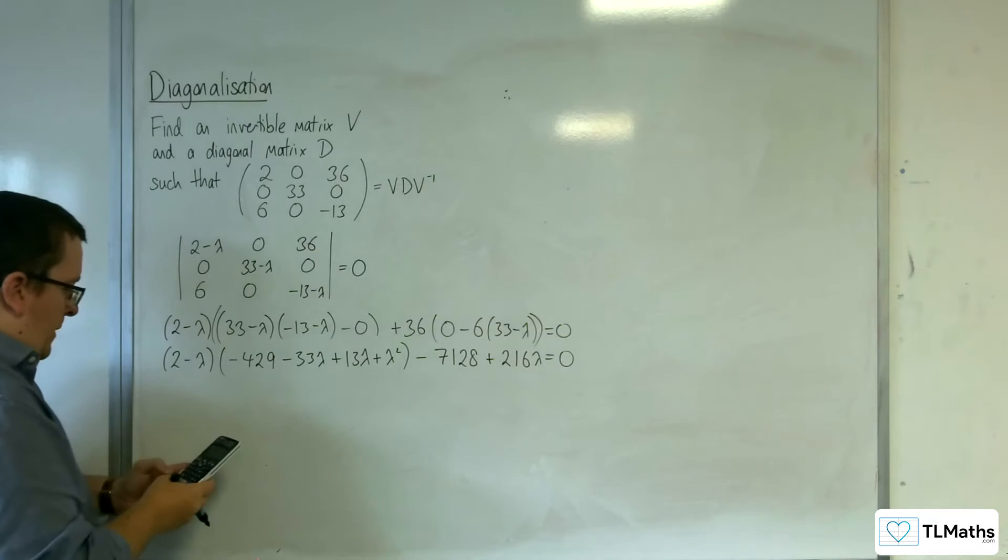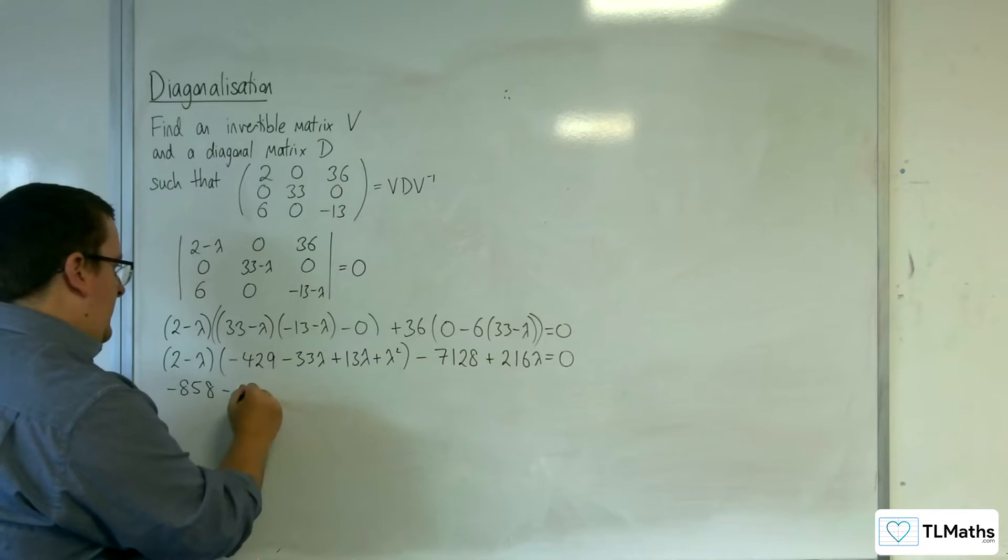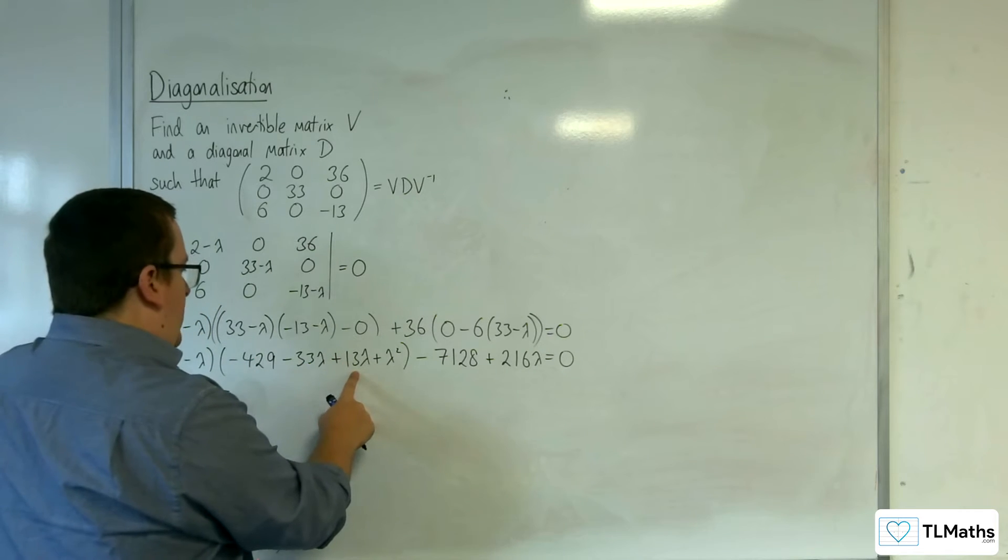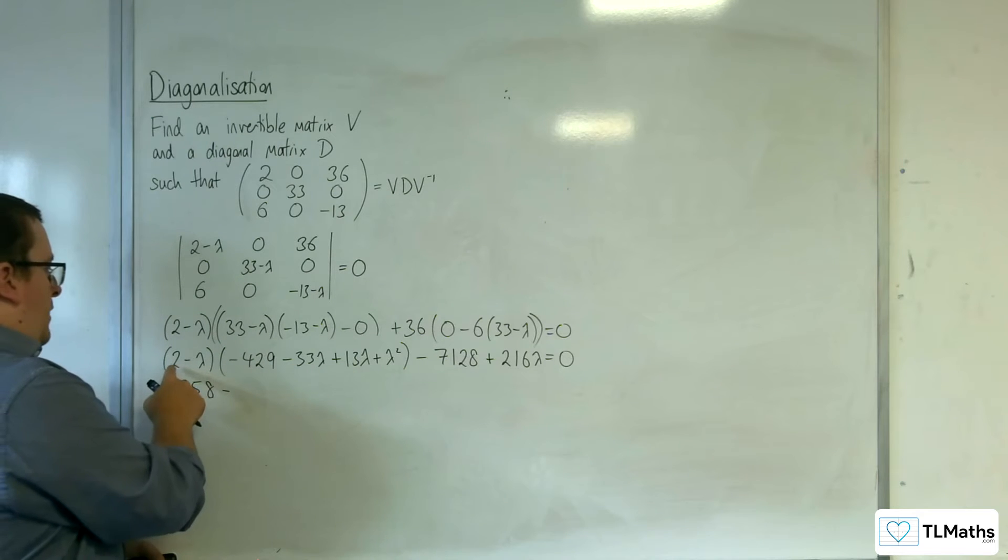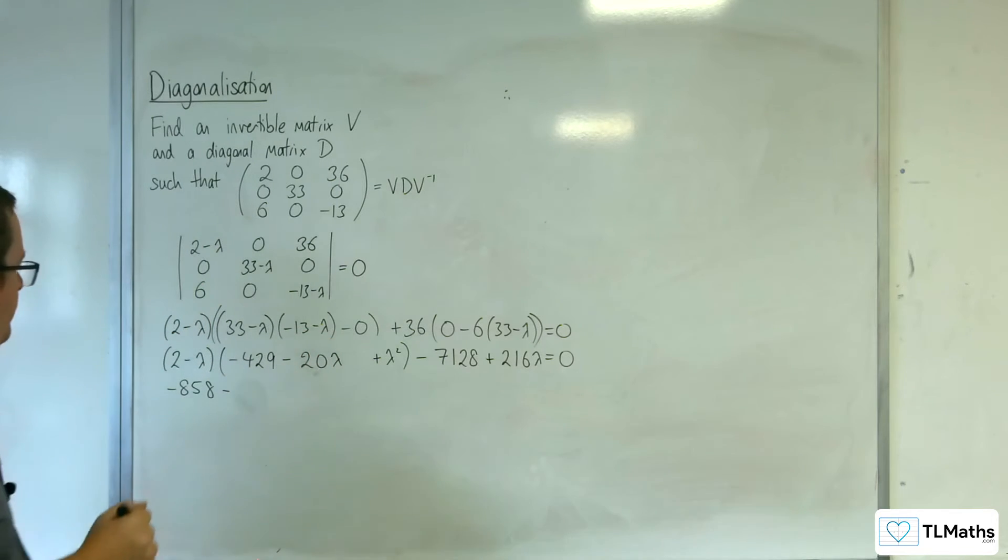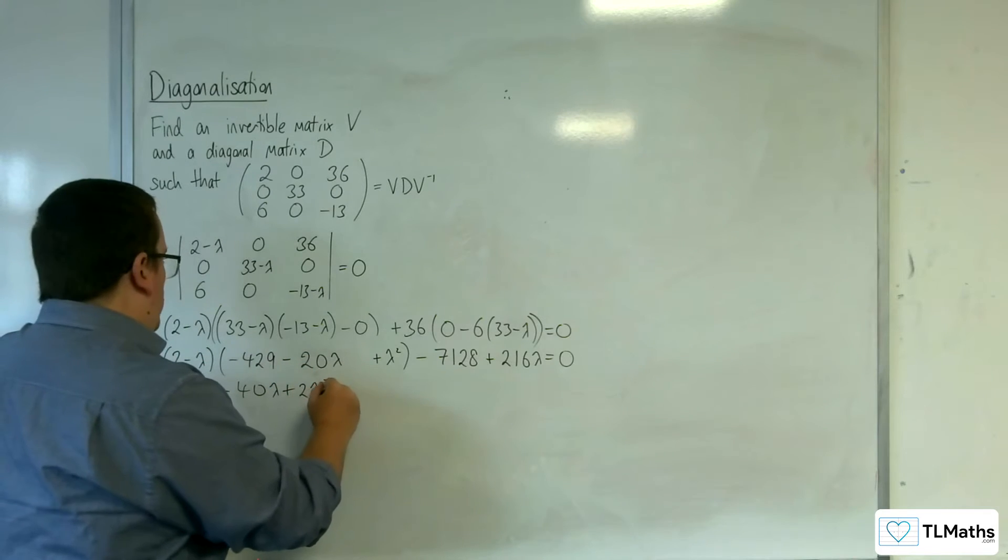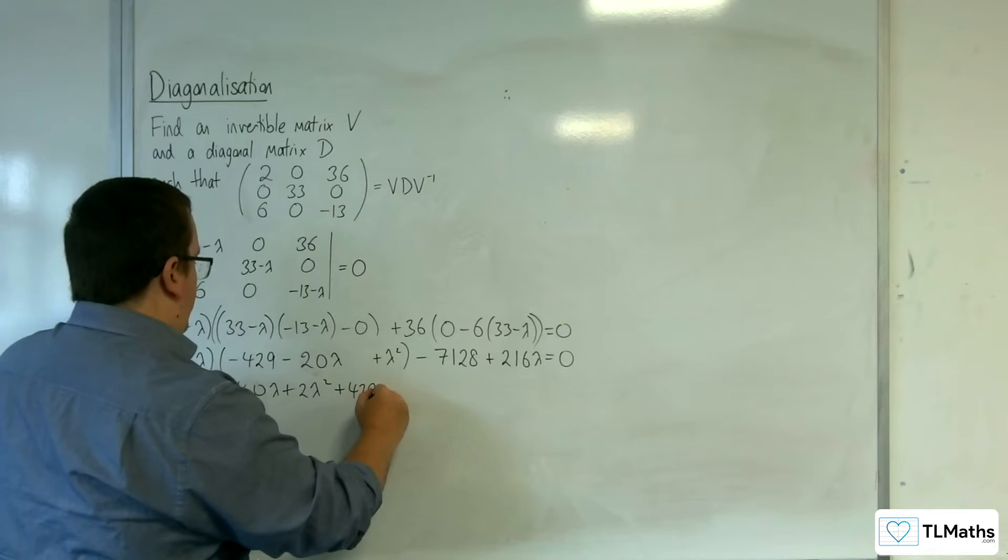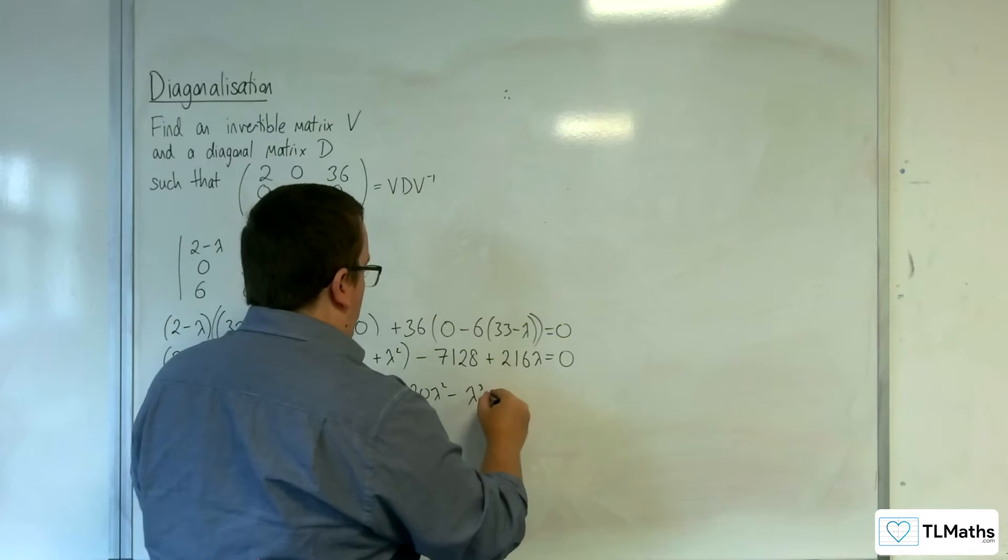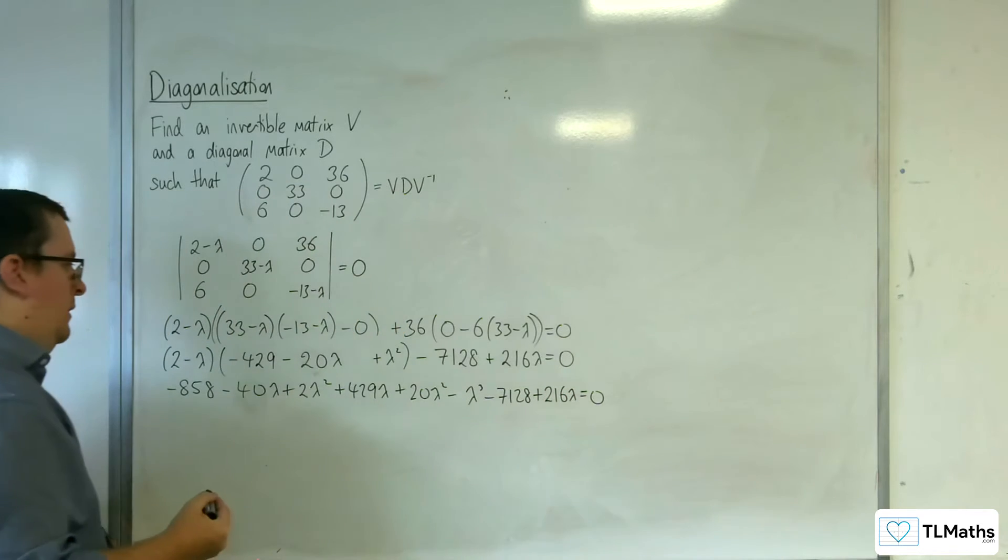So 429 doubled, 858, so minus 858. I can combine those now. So, minus 33 lambda and 13 lambda gets us to minus 20 lambda, so 2 times, well let's just replace that with minus 20 lambda. So, minus 40 lambda, then plus 2 lambda squared, then plus 429 lambda, plus 20 lambda squared, minus lambda cubed, take away 7128, plus 216 lambda equals 0.